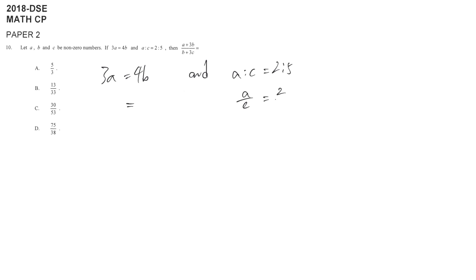That means a over c equals 2 over 5. And then we find that both equations, we can find a here, so we may consider a is our unit. If we express both b and c in terms of a, then the whole thing, our target, we can express only in terms of a, then we may simplify.